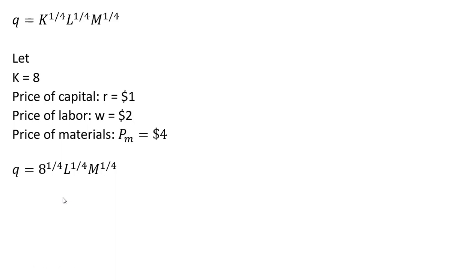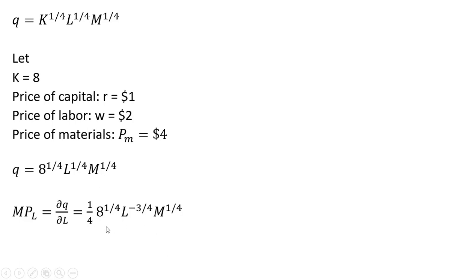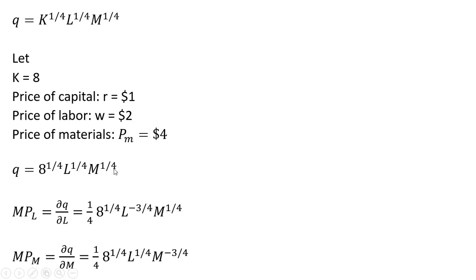From here, we want to derive the firm's short-run total cost function. The first step is to get the marginal product of labor. I'll take the partial derivative of the production function with respect to L, and we'll get this result right here. The one-fourth comes from the exponent on the L term, just bringing that down in front. And we get the marginal product of materials as the partial derivative of the production function with respect to M. This exponent on M comes down in front, so that's where the one-fourth comes from, and then M is raised to the minus three-fourths power because we take one-fourth and subtract one from it.